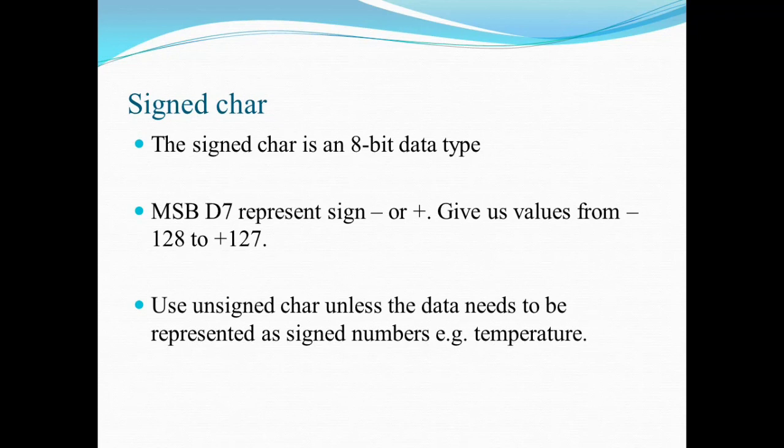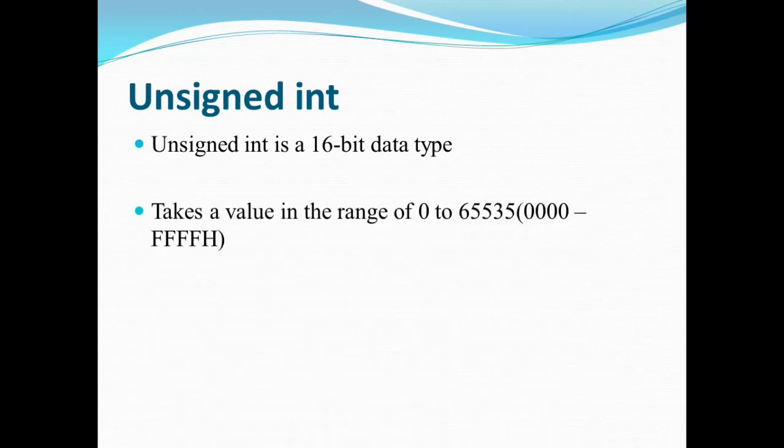Then you have unsigned integer. Unsigned integer is a 16-bit data type and therefore it will take values in the range 0 to 65535, because 2 raised to 16 gives 65535. In hexadecimal it will be 0000 to FFFH.